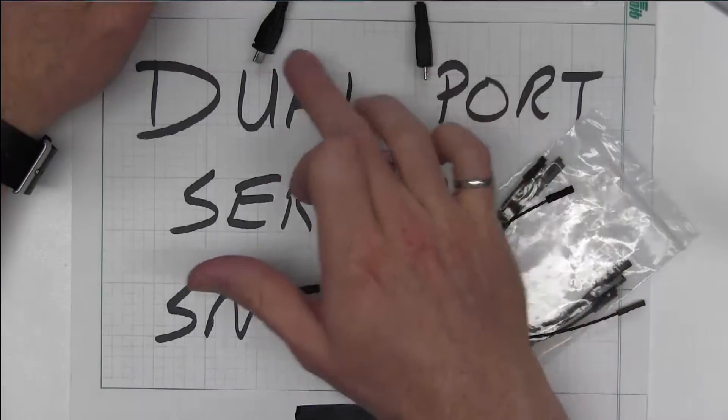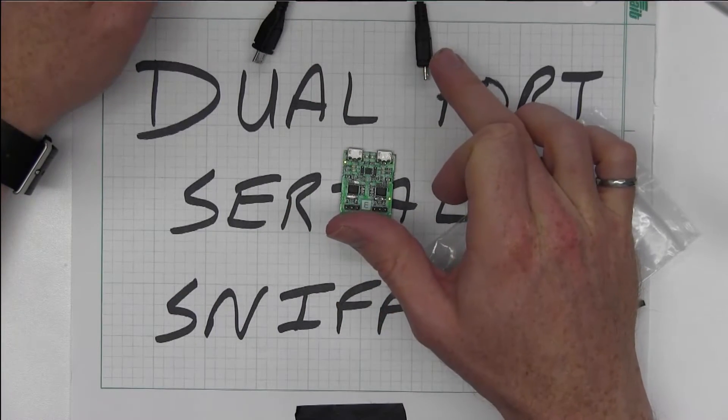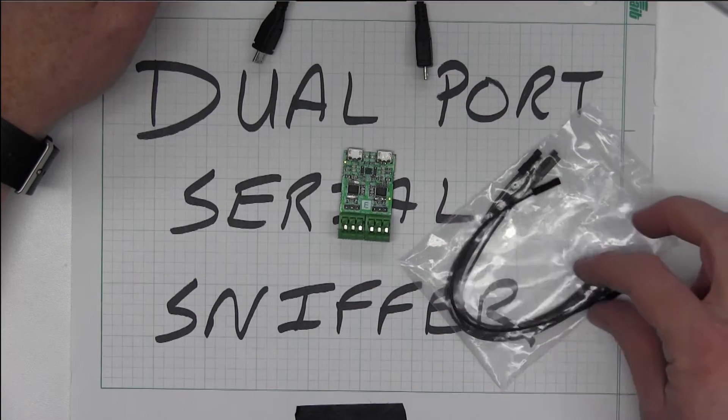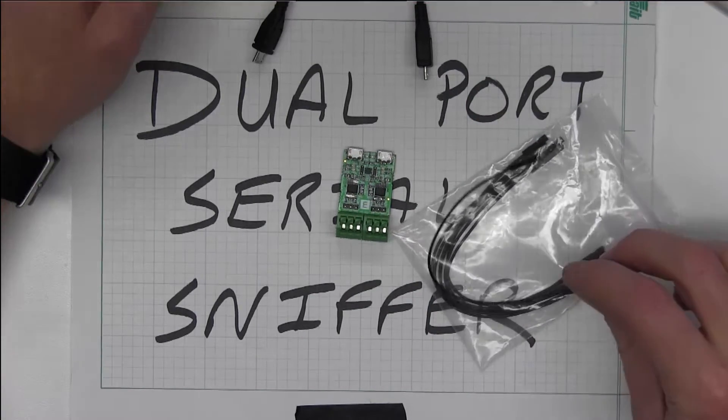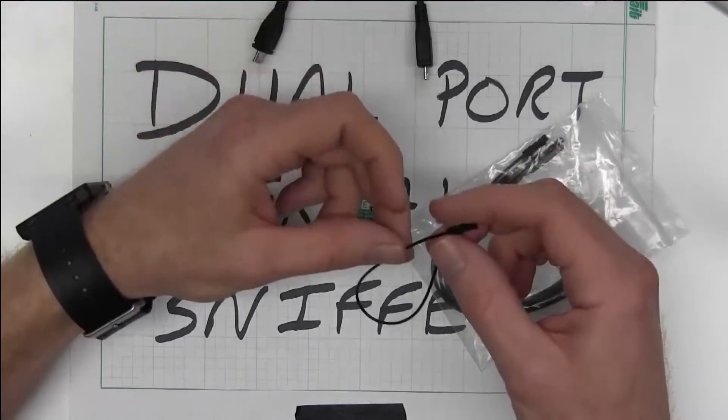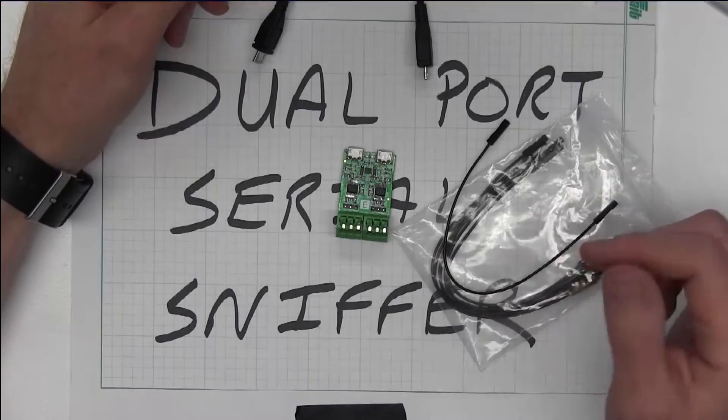You get two micro B to USB A serial cables, so you can plug directly into your PC at that point. And you get a stash of these handy little pre-configured box connector cables. So six of those that you can use with the device.